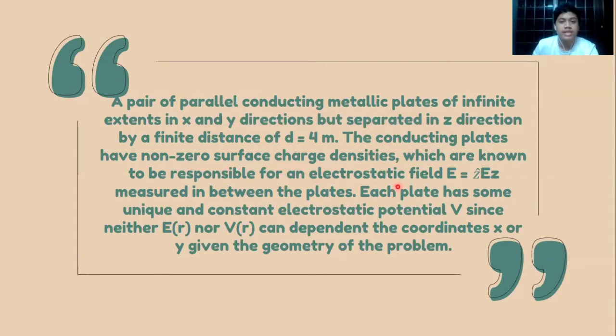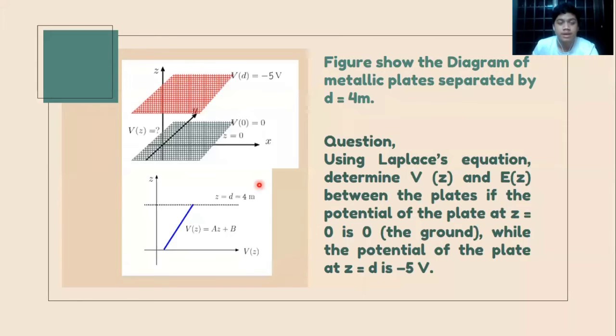The field is measured between the plates. Each plate has some unique and constant electrostatic potential V. Since neither E(r) nor V(r) can depend on the coordinates x or y given the geometry of the problem, this figure shows the metallic plates separated by d = 4 meters.